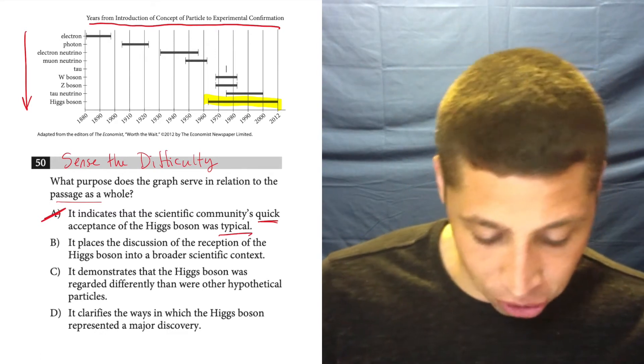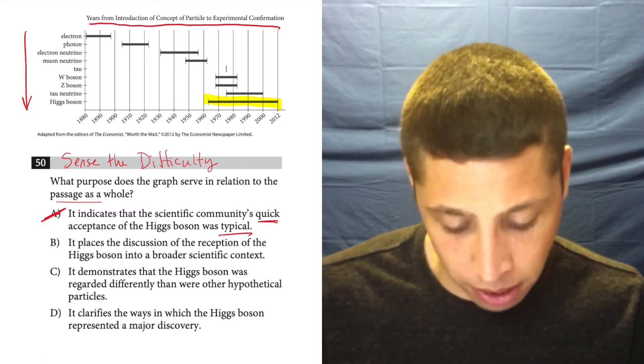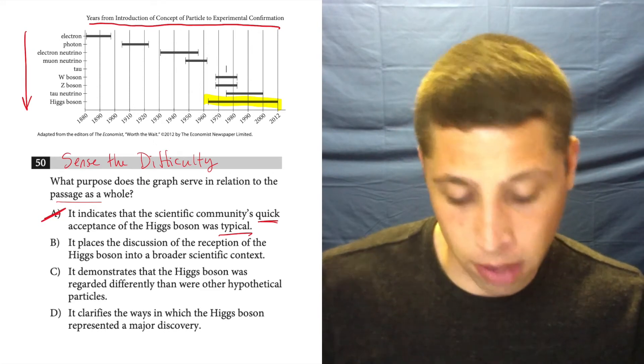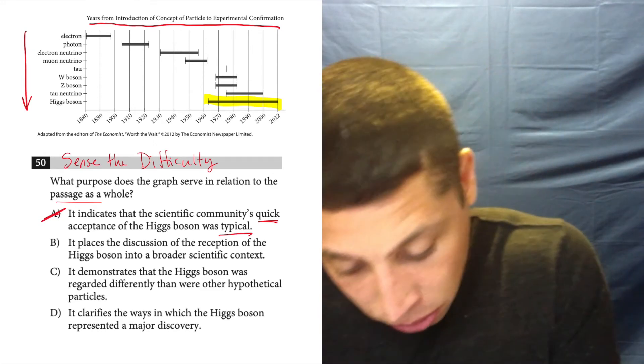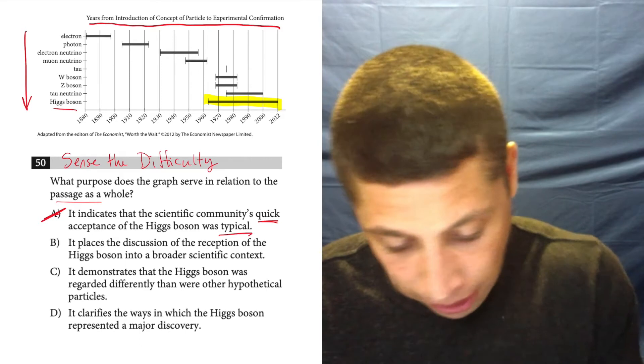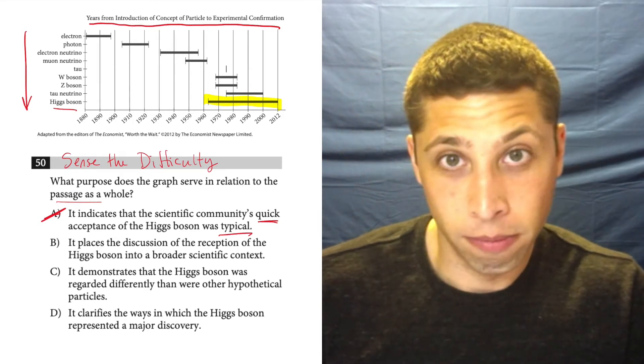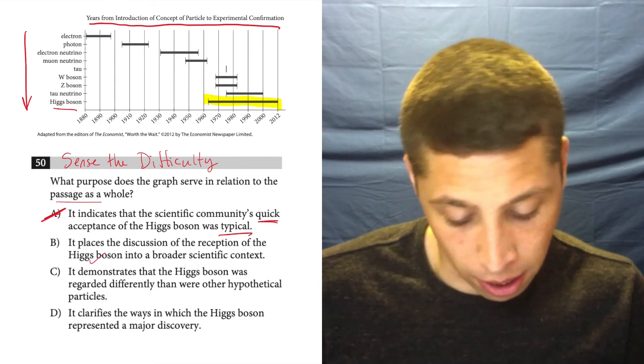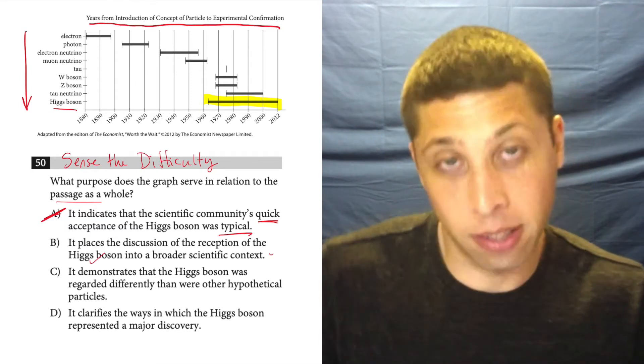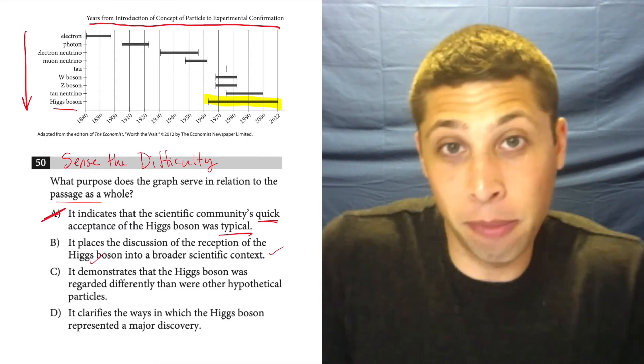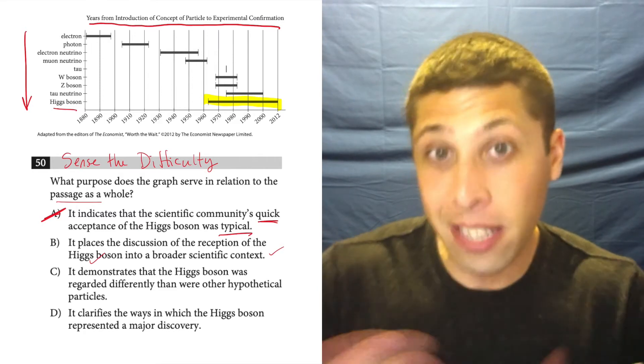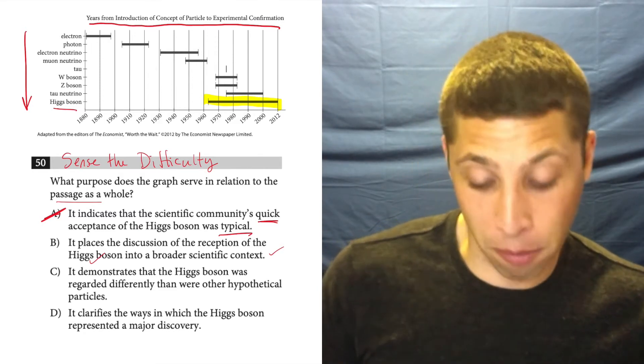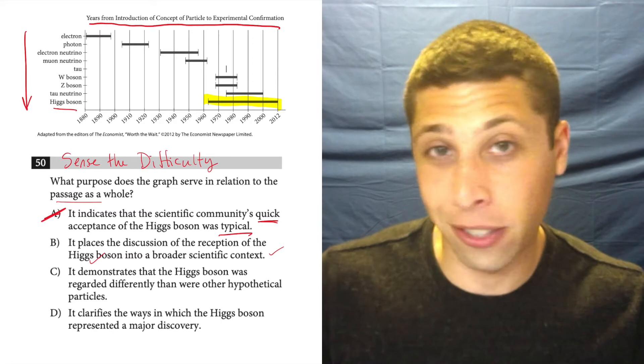B. It places the discussion of the reception of the Higgs boson into a broader scientific context. Well, okay. Well, here's the Higgs boson, and then here's a bunch of other particles. So it's talking about the boson and broader scientific context. Well, I guess because it's talking about other particles. That seems reasonable. I don't know if it's right, but it seems like a logical jump from what I'm looking at. Let's look at the others and see if we can find anything better.